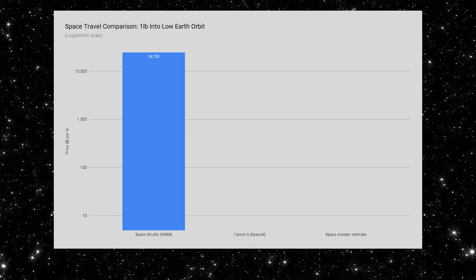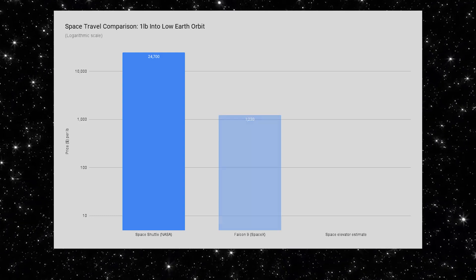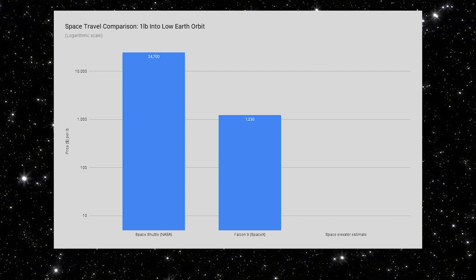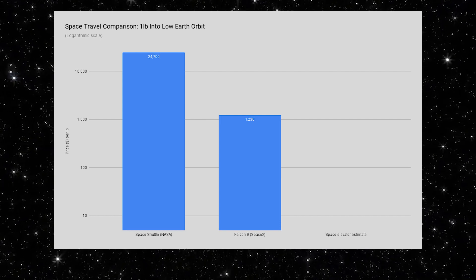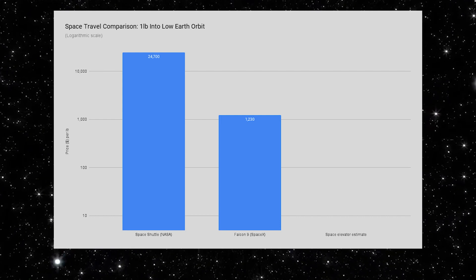More recently, SpaceX's reusable Falcon 9 rocket has dropped that number to around $1,200 per pound. But even SpaceX rockets are expensive to build and to fuel.